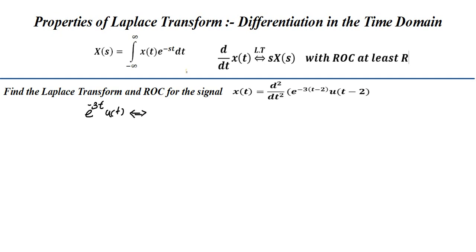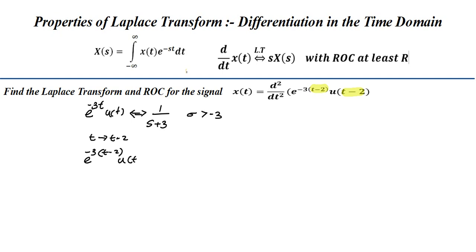The transform of this basic signal using the standard equation is 1/(s+3), with ROC: σ > −3. Now we observe that t is changing to t−2, because a time-shifting operation is performed. So t → t−2, giving us the new signal e^(−3(t−2))·u(t−2), which is the time-shifted version of the signal.